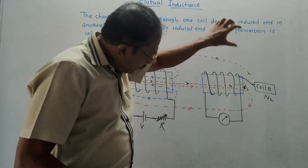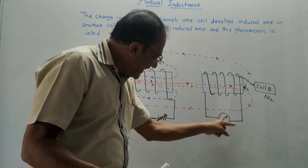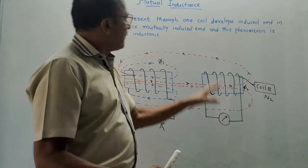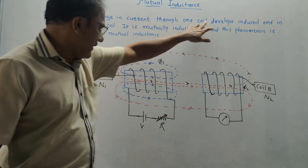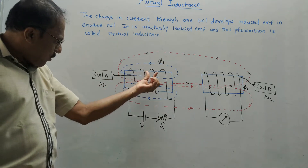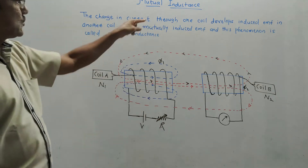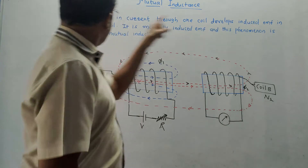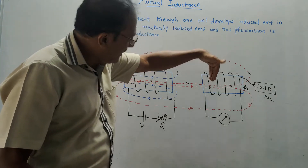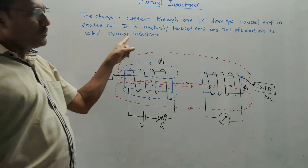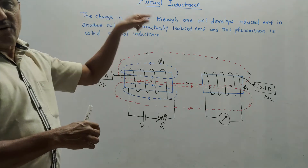Due to this mutually induced EMF, some current starts flowing in coil 2, measured by an ammeter. The definition: the change in current through one coil — the main coil connected to the voltage source — develops an induced EMF in another coil. This phenomenon is called mutual inductance. Now we will solve a few numericals to get an idea of this concept.